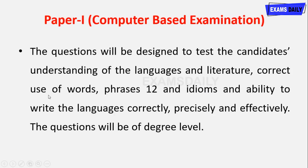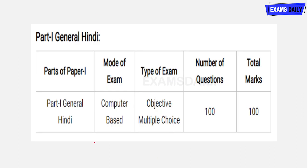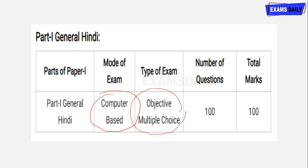Paper 1 is a computer-based examination written online. In this paper they are going to test the understanding of languages and literature, correct use of words, phrases, and idioms, and the ability to write the language correctly, precisely, and effectively. The questions will be of degree level. Part 1 is General Hindi — mode is computer-based, type is objective multiple choice questions, total 100 questions for 100 marks.